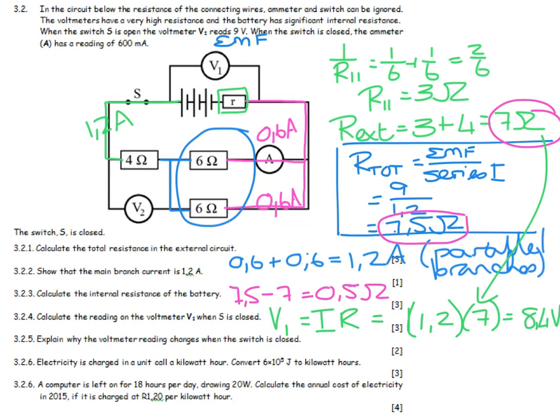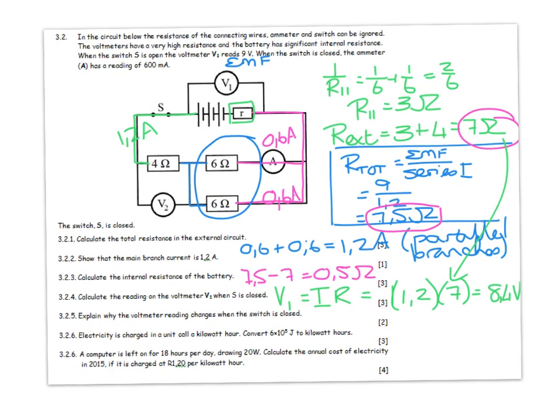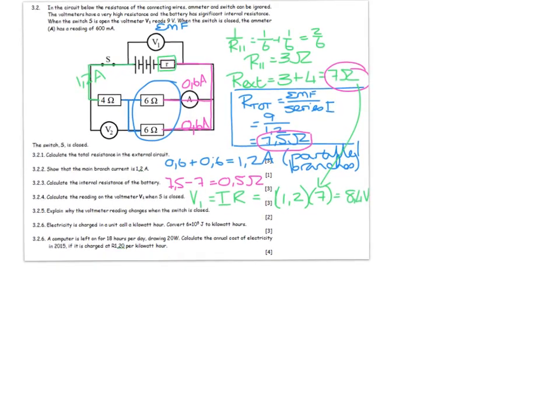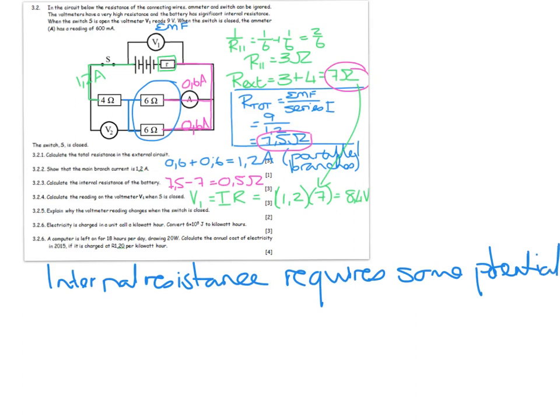Explain why the voltmeter reading changes when the switch is closed. Now we've got an explanation over here, and it's obviously got to do with the concept of internal resistance. You need to obviously say internal resistance requires some potential to drive the current through the circuit.